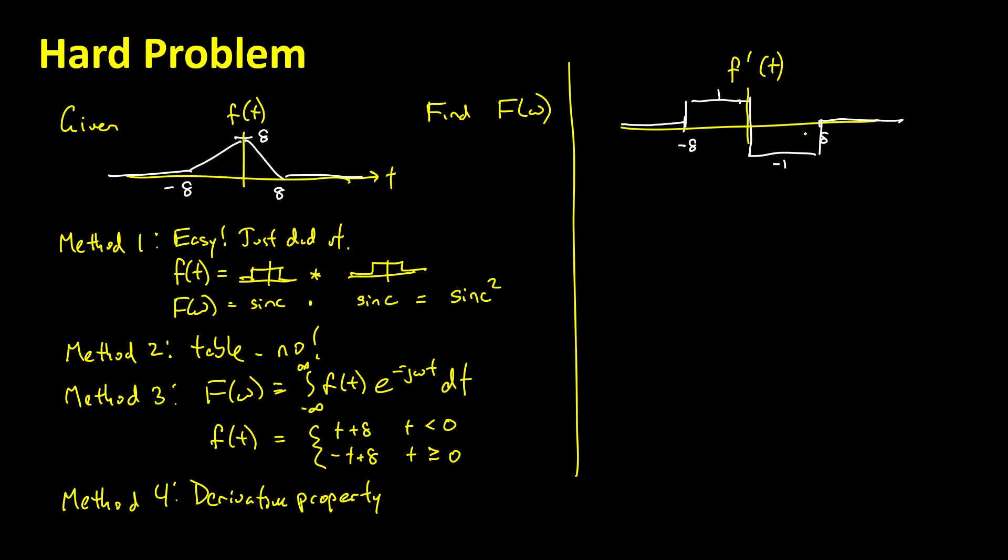We know how to push things to the left and the right. That's the time delay property. We know the boxcar, that's the sinc. So we'd end up having two delayed boxcars. That's still hard. Let's take another derivative and see what we can come up with.